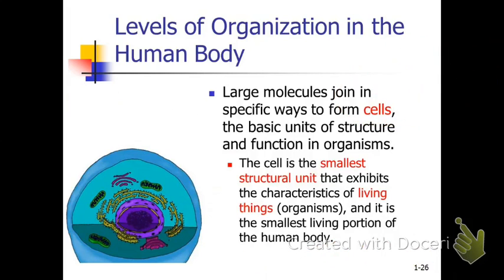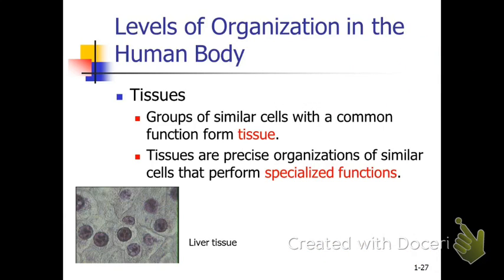Those 250 different kinds of cells and those 75 trillion cells are going to combine to make your tissues. The tissues come in four different groups, and these tissues are going to have specialized function. The study of tissues is histology.